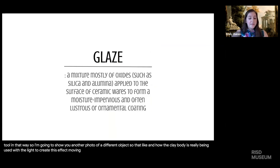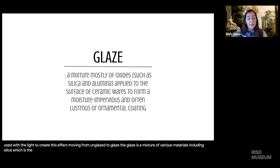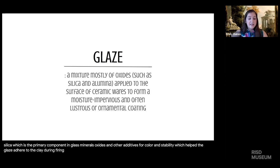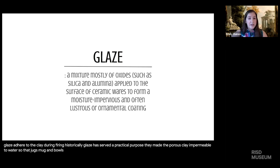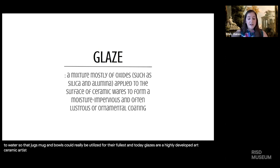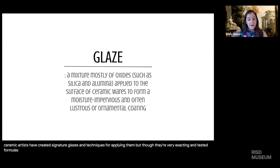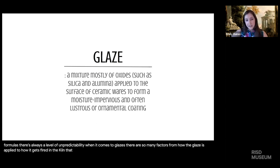Moving from unglazed to glaze — a glaze is a mixture of various materials including silica (the primary component in glass), minerals, oxides, and other additives for color and stability, which help the glaze adhere to the clay during firing. Historically, glazes served a practical purpose: they made the porous clay impermeable to water so that jugs, mugs, and bowls could be fully utilized. Today, glazes are a highly developed art. Ceramic artists have created signature glazes and techniques for applying them, but though they're very exacting and tested formulas, there's always a level of unpredictability — from how the glaze is applied to how it gets fired in the kiln — that can affect the final appearance.